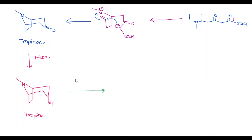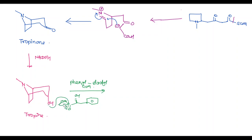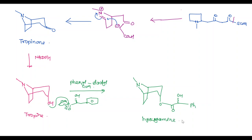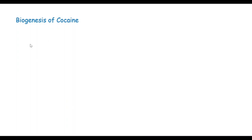And D-scopine, when it reacts with phenyllactyl coenzyme A, we get hyoscyamine. This is all about the biogenesis of tropine and hyoscyamine.